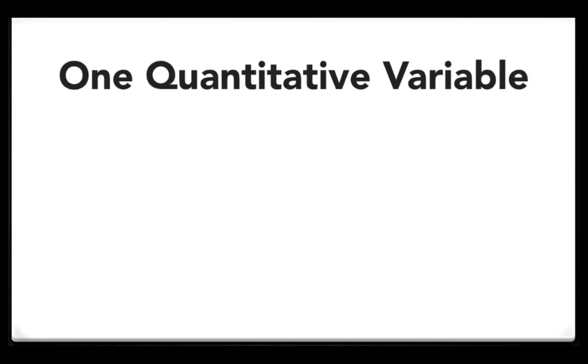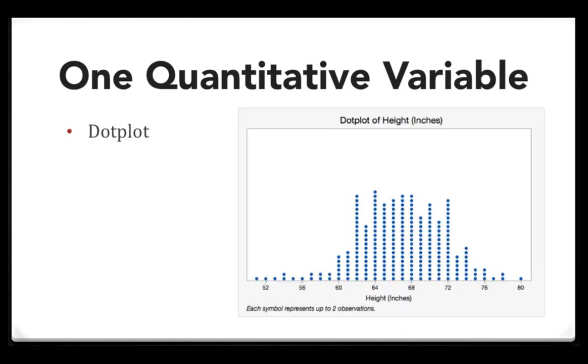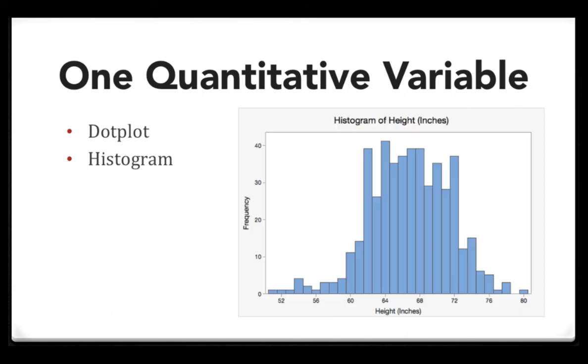In terms of one quantitative variable, you could construct a dot plot or a histogram. Note that in the histogram, the bars are touching. This signifies that this is a quantitative variable.